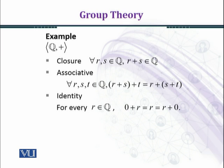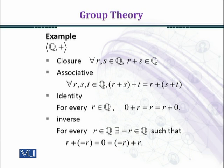We need to find the identity element. As seen before, zero is the additive identity in the integers, and every integer is a rational number, so zero is also the additive identity in Q. Identity law is satisfied: 0 plus r equals r equals r plus 0 for every r in Q. For the inverse, we choose arbitrary r in Q; there exists minus r in Q such that r plus (minus r) equals 0. All axioms are satisfied, and Q forms a group under addition.